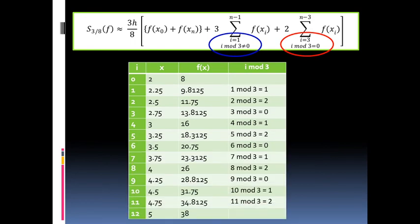Taking back the table, when i is 1, 1 modulus 3 is equal to 1. And when i is equal to 2, 2 modulus 3 is equal to 2. So it will follow for the rest of the values of i, then i modulus 3, we will have this.